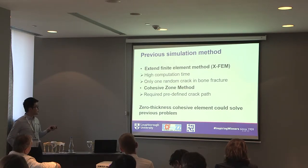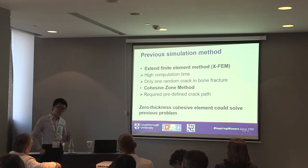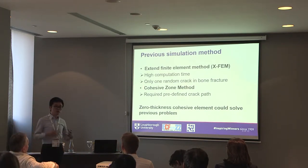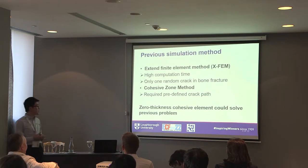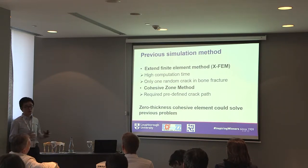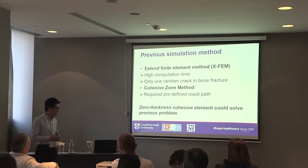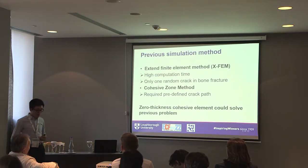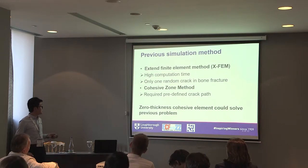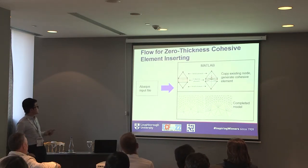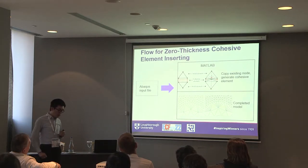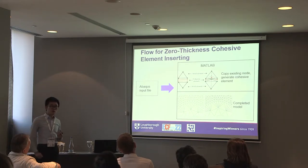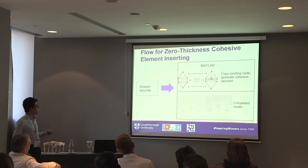Cohesive zone elements require a clearly predefined damaged zone, which is not beneficial for bone fracture analysis because the fracture path within these composite materials is very difficult to predict. A clearly predefined crack path is therefore not ideal. To overcome these difficulties, we propose to use cohesive elements which enrich and superpose onto conventional elements meshed within the microstructured bone tissue, enabling a fully random crack path around each element.